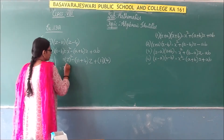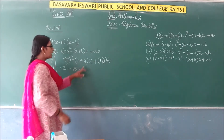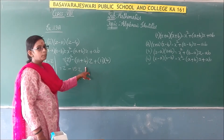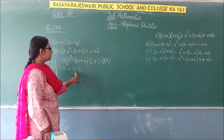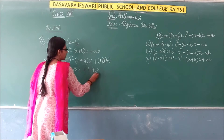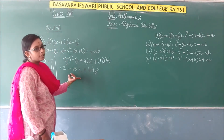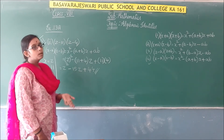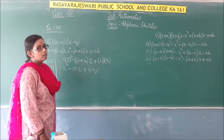Now substituting: z² minus (11 + 4) is 15z. The bracket indicates multiplication, so 15 into z gives 15z, plus 11 times 4 is 44. We cannot add the unlike terms, so this is our final answer.